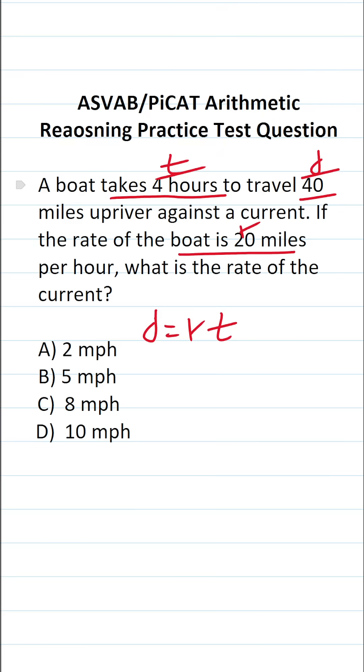That said, this problem is a little bit tricky because it throws this new variable at us, notably the rate of the current. So before we can use the distance formula, we have to make a slight modification to it algebraically. Let's think about this problem and determine how we're going to make that modification.